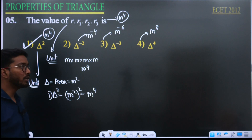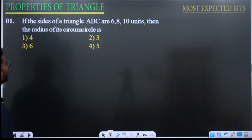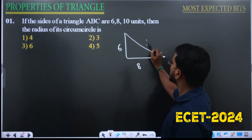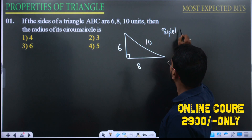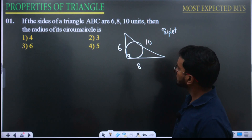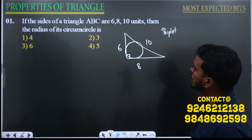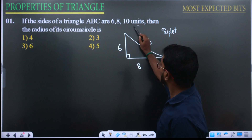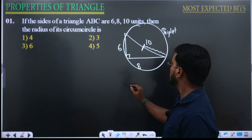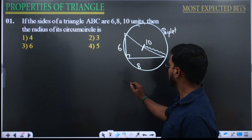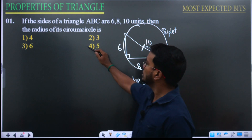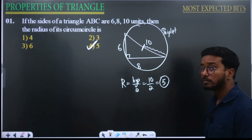Next: sides of triangle ABC are 6, 8, 10. This is a Pythagorean triplet, indicating a right-angled triangle. The question asks for the radius of the circum-circle. For a right-angled triangle, the circum-radius R equals hypotenuse divided by 2. Hypotenuse is 10, so R equals 10/2 equals 5. The correct answer is 5. This is a most expected question for ESET 2024.